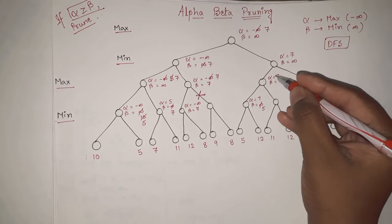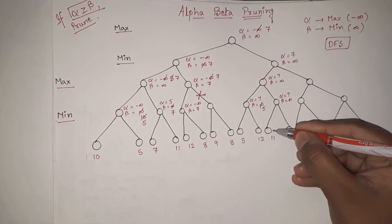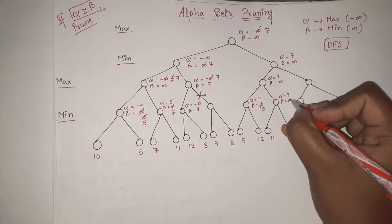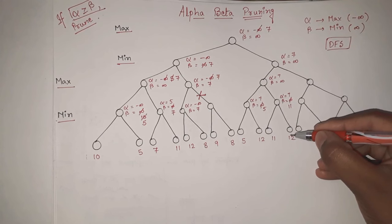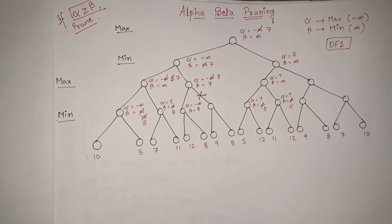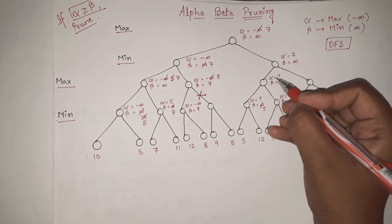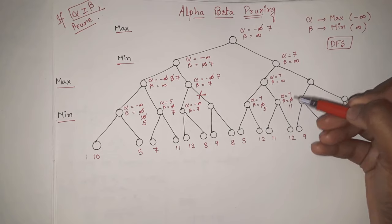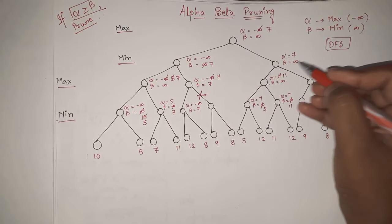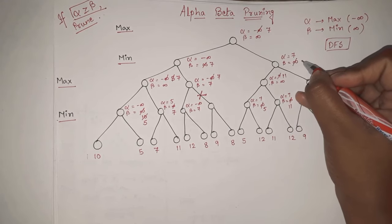After this, the value is carried forward: alpha equal to 7, beta equal to infinity. The leaf value here is 11, and this is a min node, so beta is updated. Out of infinity and 11, the smaller is 11. Then out of 11 and 12, 11 is smaller, so the updated beta is 11. We traverse back to the max node and update alpha. Out of 7, 7, and 11, the biggest is 11. So alpha is updated to 11. Going up to the min node, beta is updated to 11.